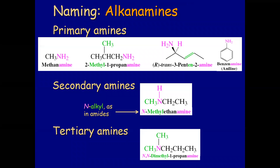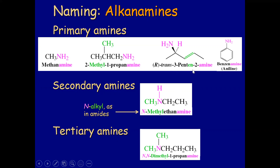Naming is not that difficult as long as you do it properly. For a primary amine, the amine suffix goes at the end. For example, methanamine — you name the alkyl chain and instead of the normal '-yl' ending, you use '-amine'. The '-an-' suffix also represents an alkane, so if you have an alkene there will be '-en-' and you would also want to specify the position.